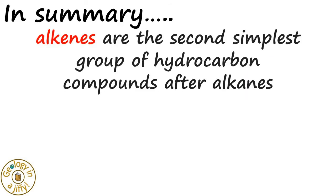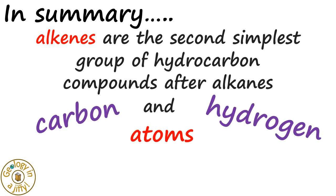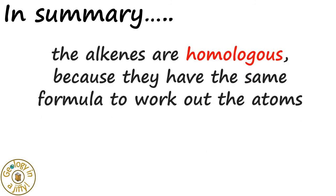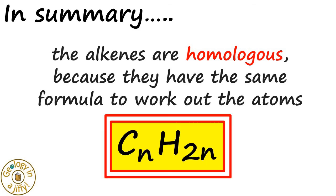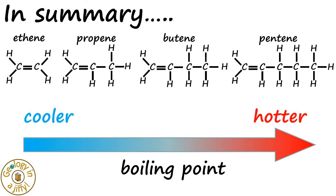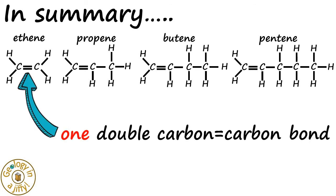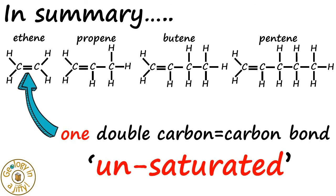In summary, alkenes are the second simplest group of hydrocarbon compounds after alkanes. They are composed of carbon and hydrogen atoms that are covalently bonded together. The alkenes are homologous because they share the same formula CnH2n. The boiling point of alkenes becomes higher as the molecules get longer, and because the alkenes have one double carbon-carbon bond, they are unsaturated.